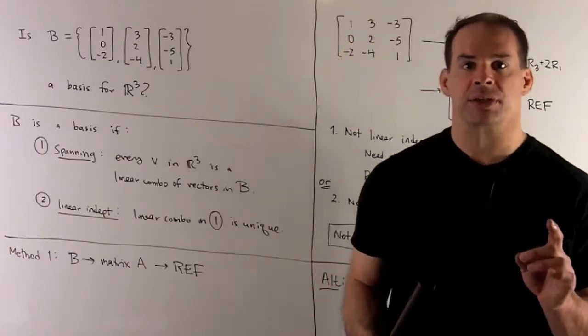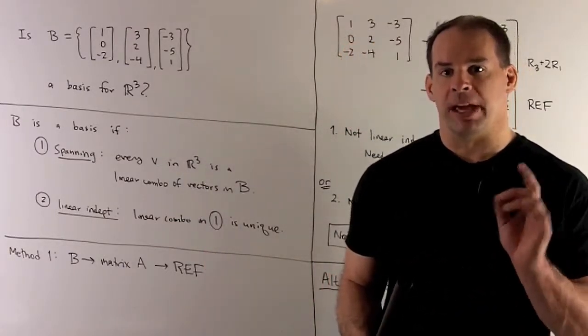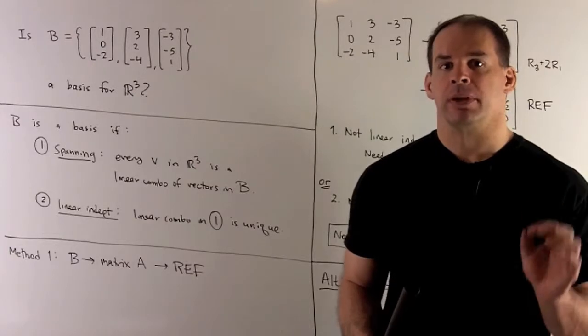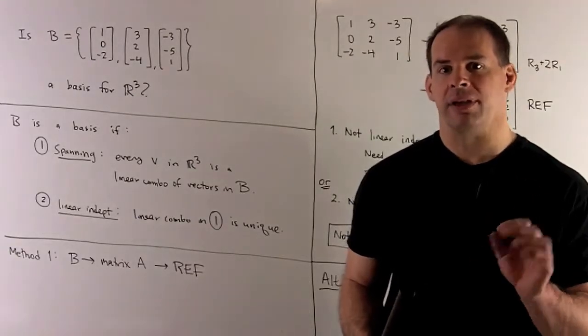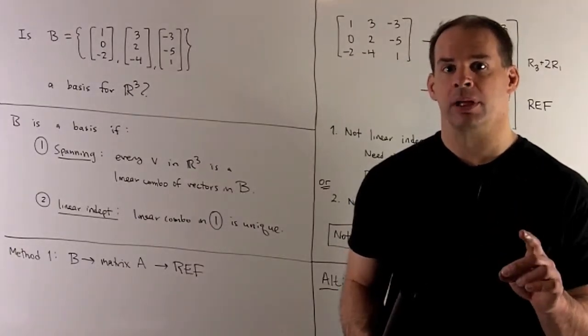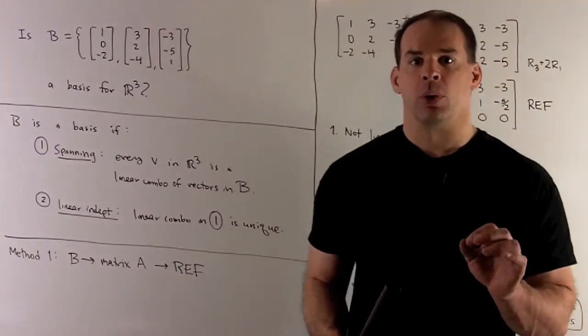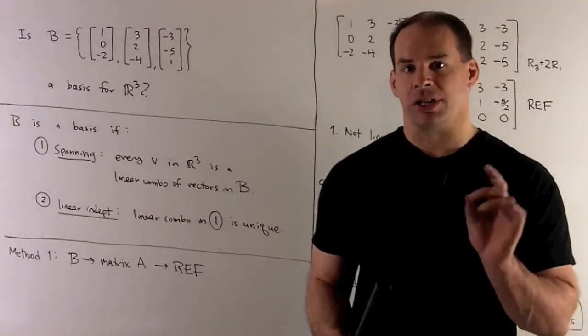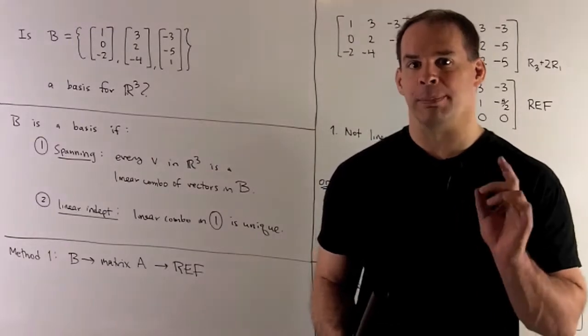To check if we have a basis, we need two things. First, the set must be spanning. That means if you take any vector in R³, we can write that vector as a linear combination of elements in B.